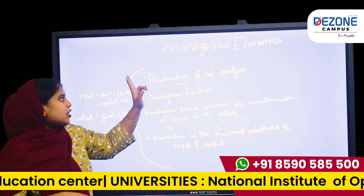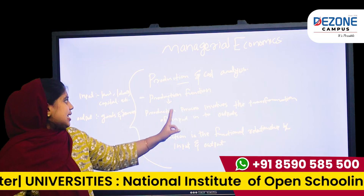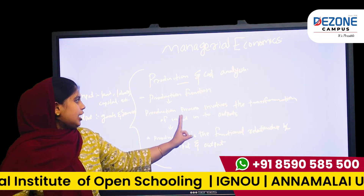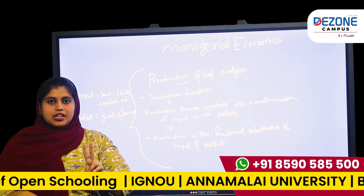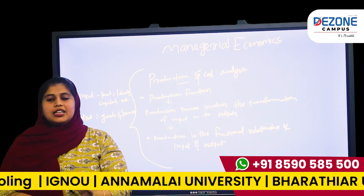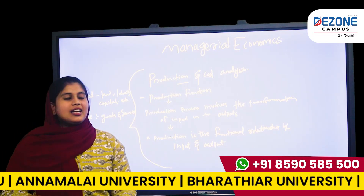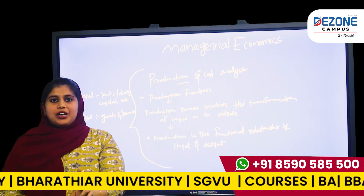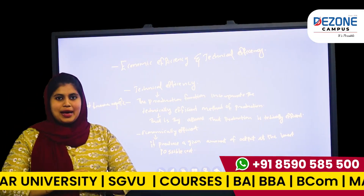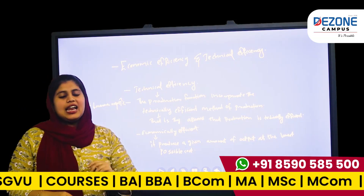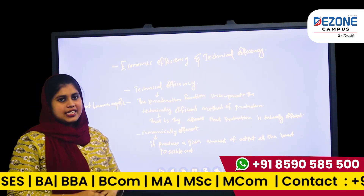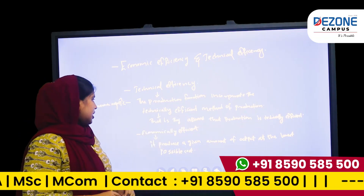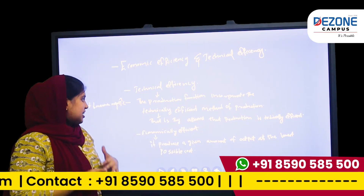What is the production and cost analysis? In production and cost analysis, what is the production function? Production process involves the transformation of input into output. That is the production function. Production is the functional relationship between input and output. Next is economic efficiency and technical efficiency. The production function incorporates the technically efficient method of production — they assume that production is technically efficient.